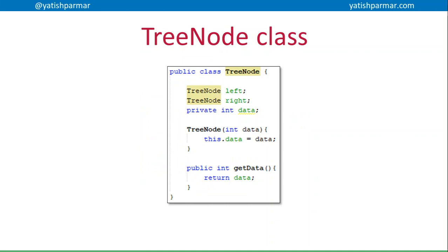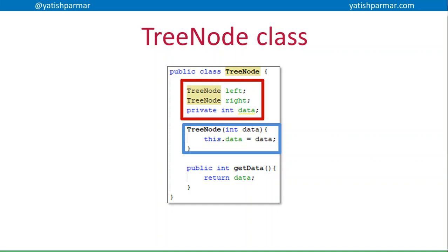Every tree is made up of tree nodes. Since I have a binary tree, I need two pointers: a TreeNode left and a TreeNode right. I also have my data stored at that node. I'm being lazy here as a proof of concept — if you're storing useful data at each node you would have a key and then other fields as well. My constructor for the TreeNode just receives the data item to store, and I have a getData method as well.